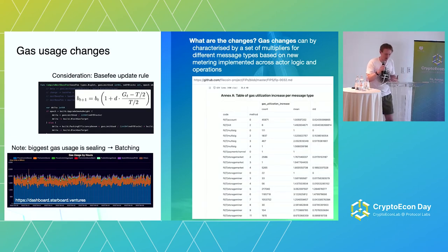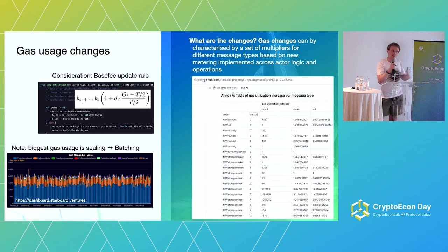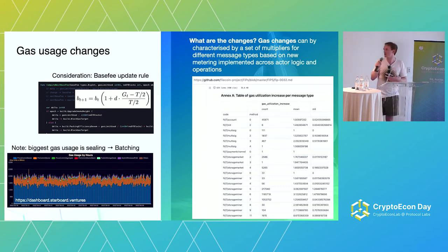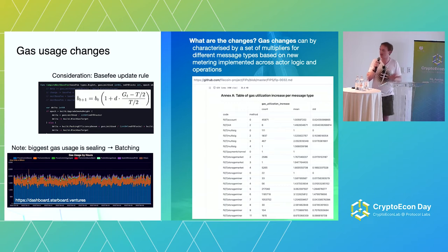We were asked by the FVM team to take a look at this. The first thing we think about is: you're going to increase gas usage, so what's going to happen? You can think about the base fee update rule — the protocol is targeting some level of block fullness, and if we go above that, the base fee goes up. That seems like a simple conclusion. But looking at the gas chart from Starboard, we can see that actually most gas usage comes from sealing. So actually, miners can batch — and probably it's not going to be a big deal at all.